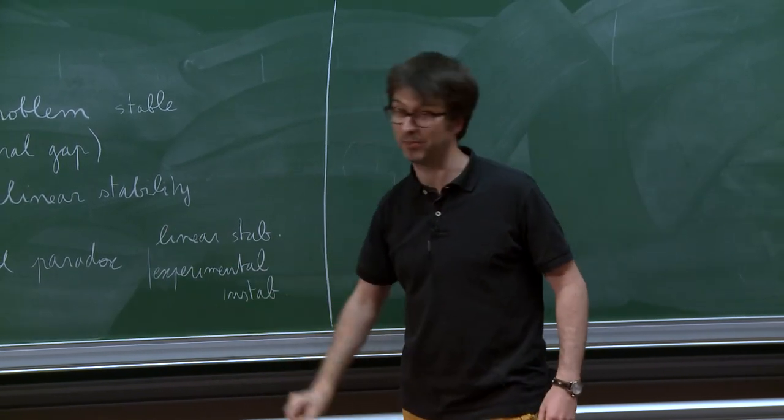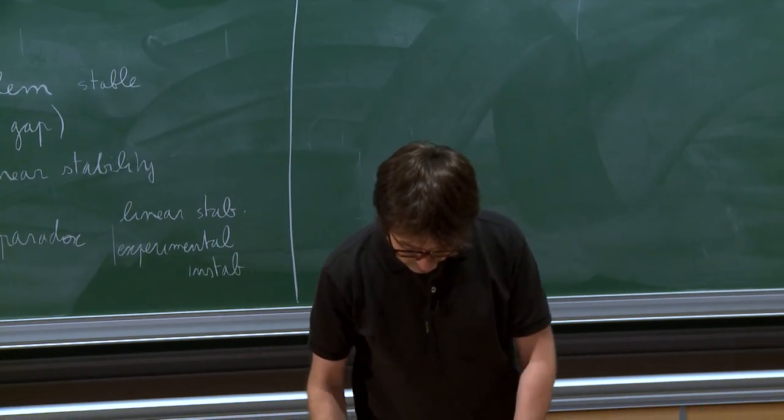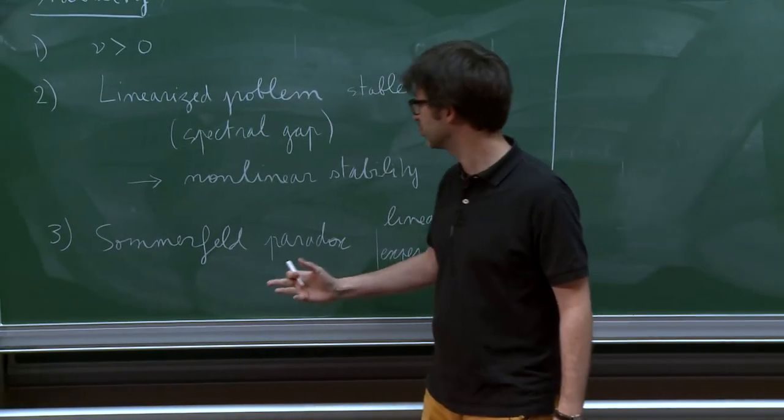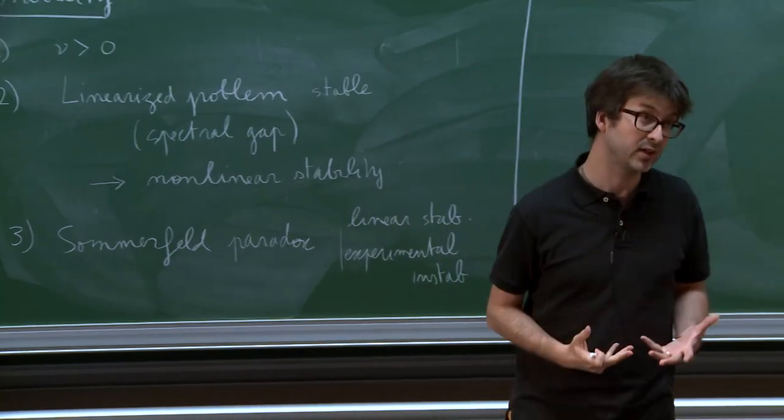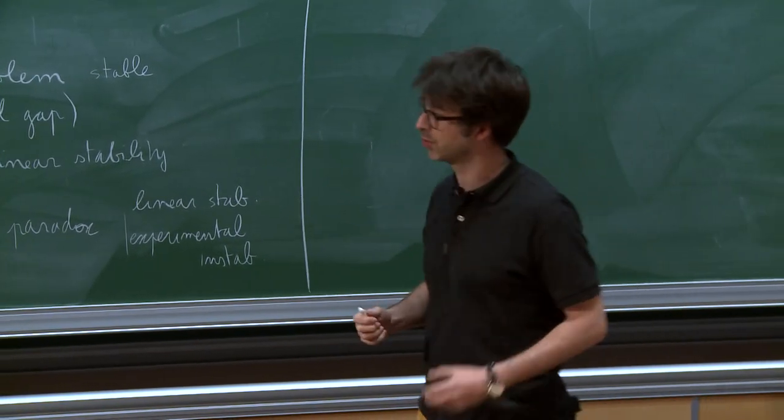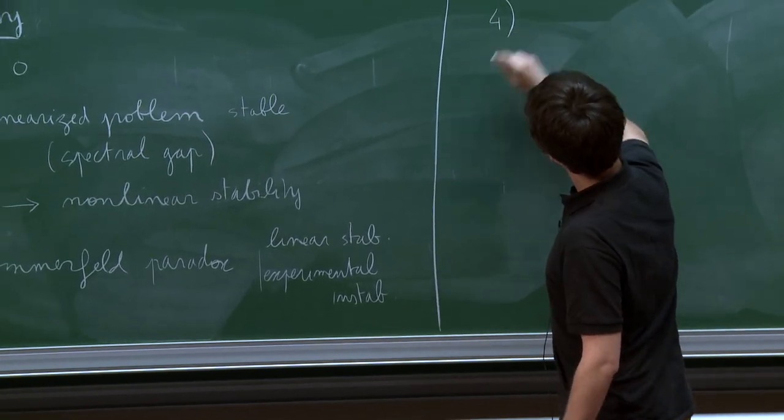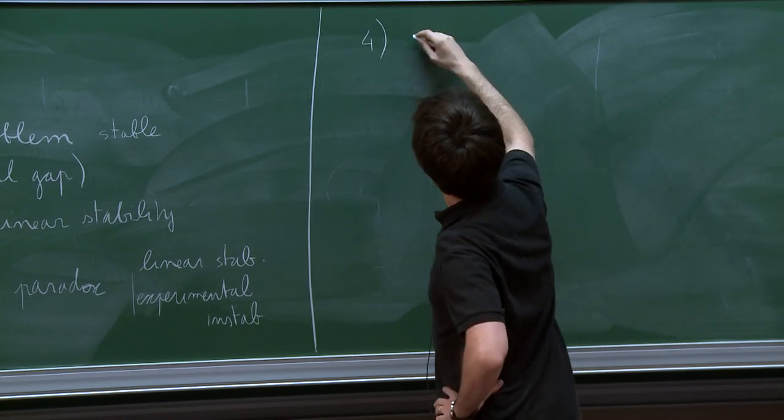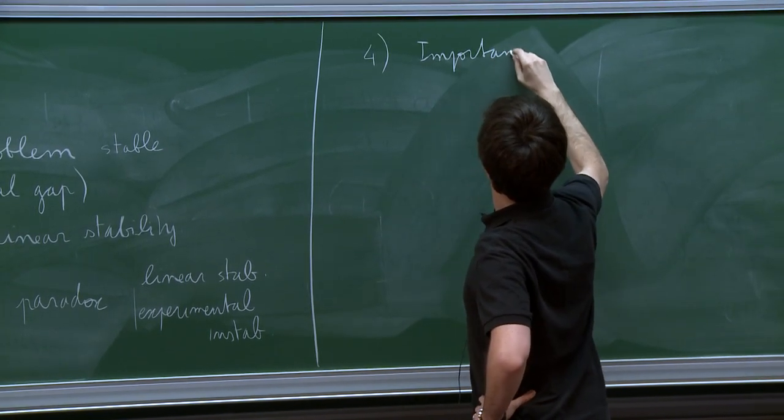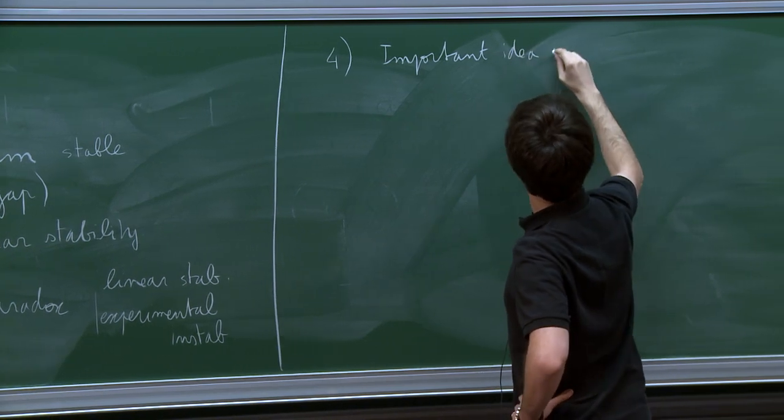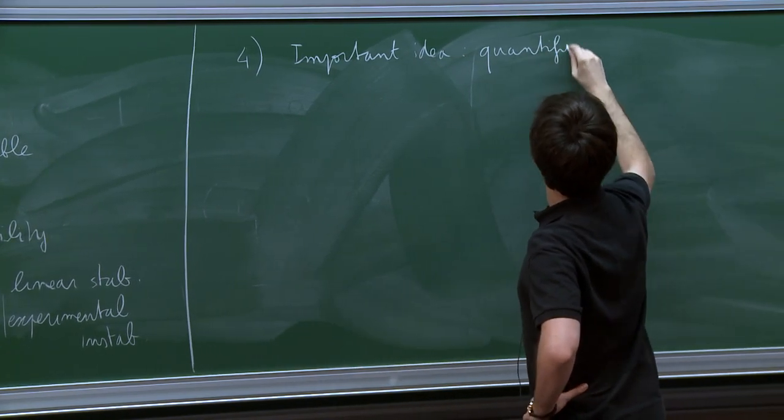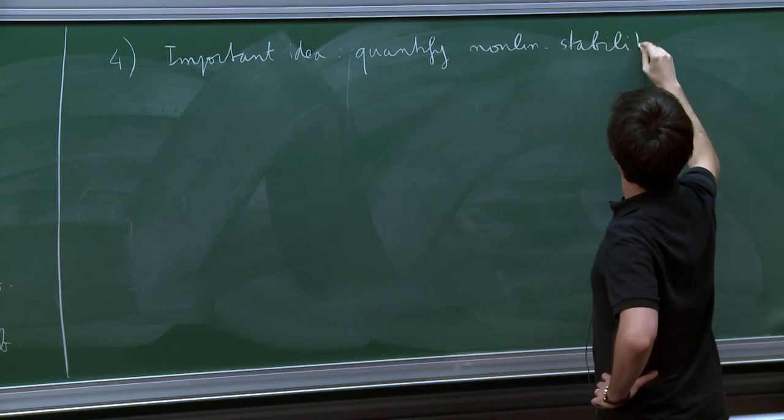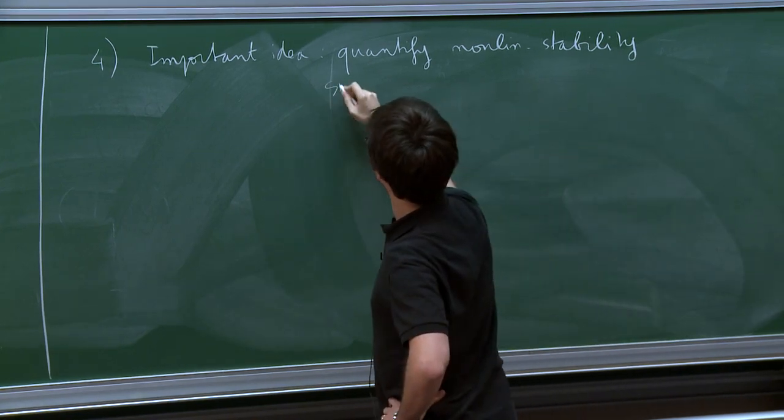Okay. So of course, it's not really a paradox. Really what it underlines is that the important notion is not so much non-linear stability as the size of the basin of attraction of the Couette flow. Okay, so if you want the resolution of the paradox is just saying that the important idea, say, is to sort of quantify non-linear stability in finding the size of the basin of attraction.